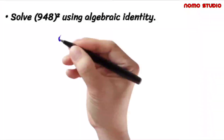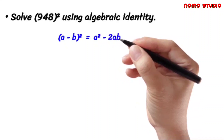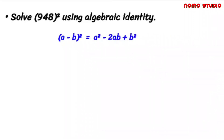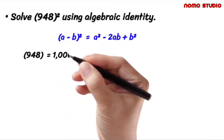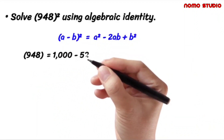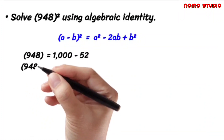Let's try using this one. Think of any number that, if we subtract them, the result is 948. Let's try with 1000 minus 52. So let's square this one.